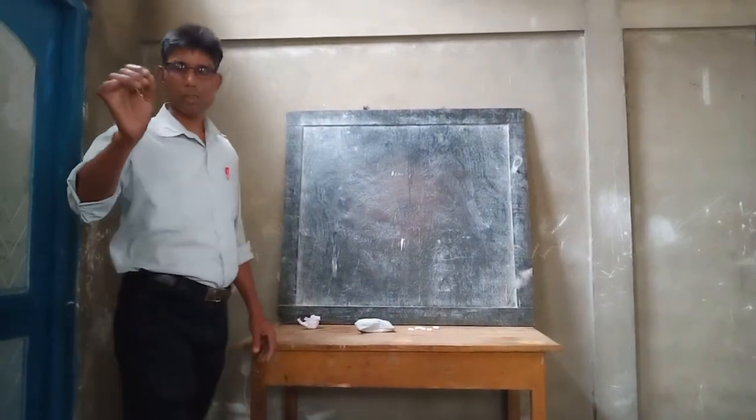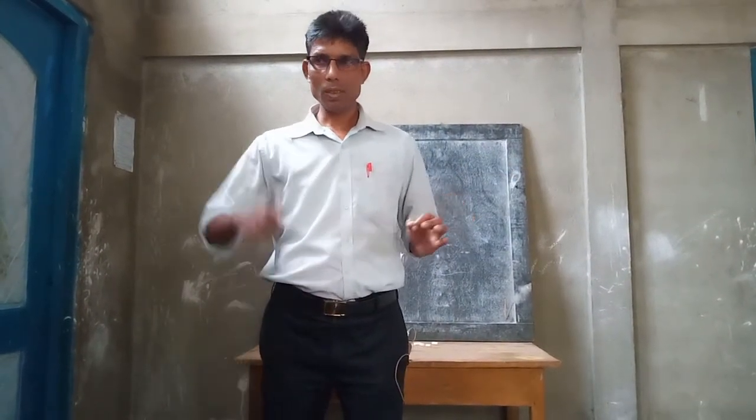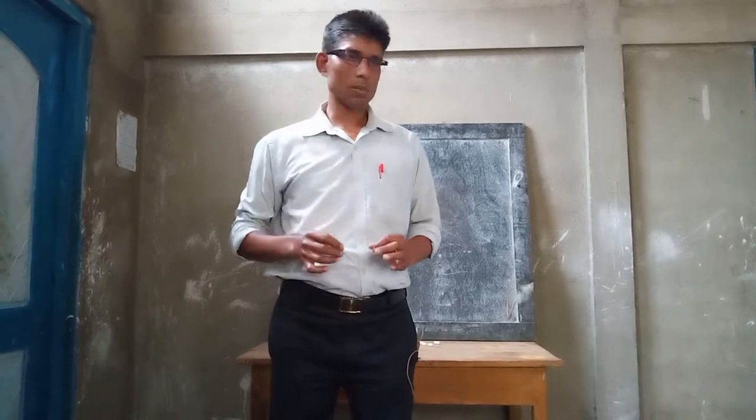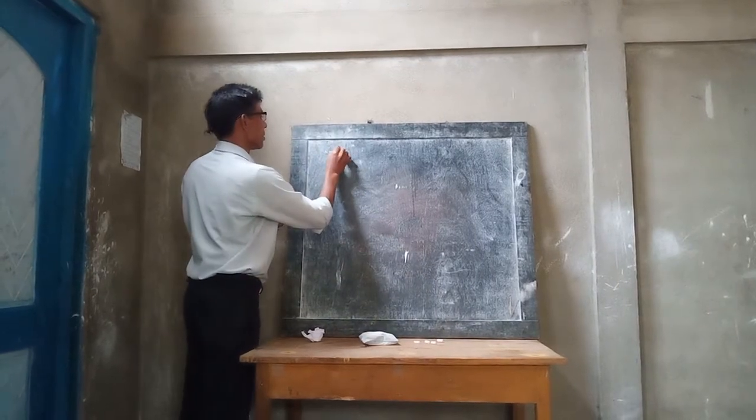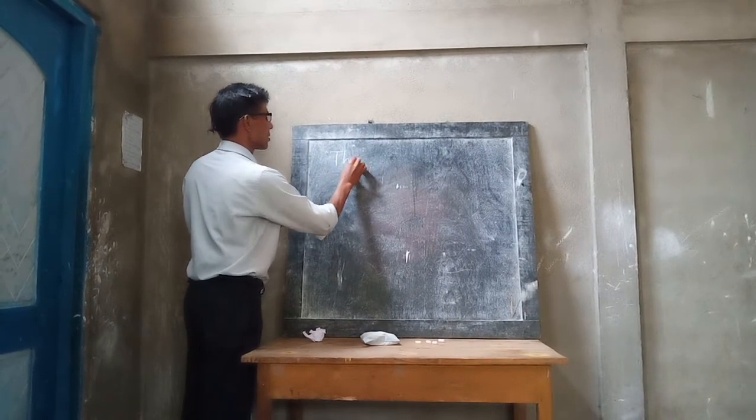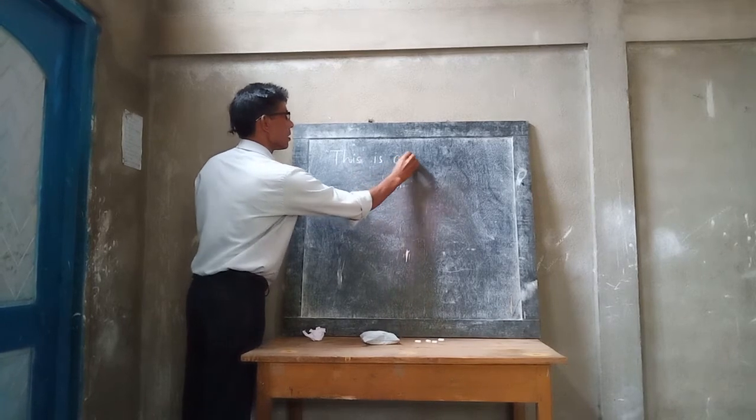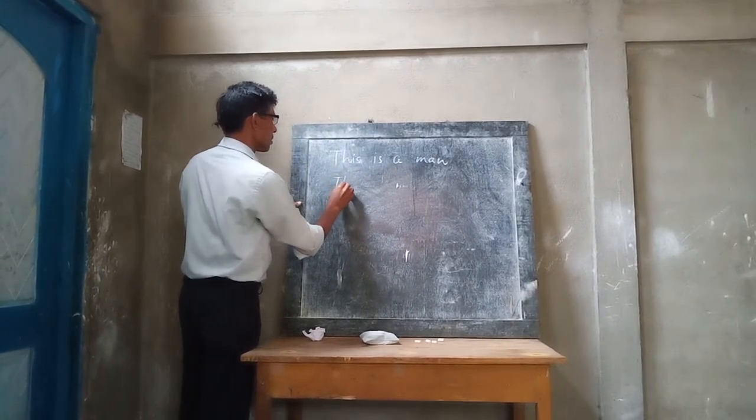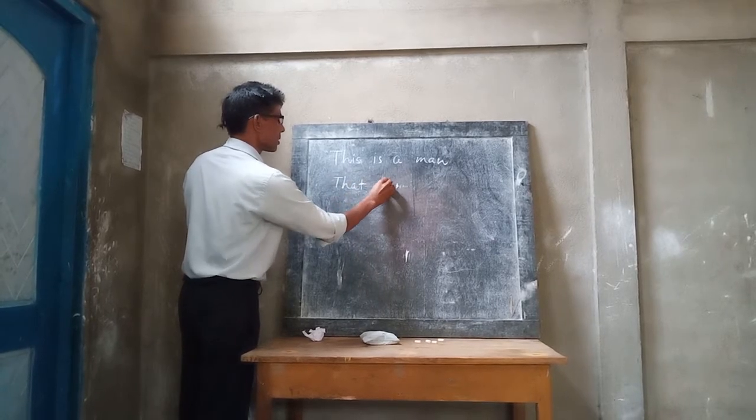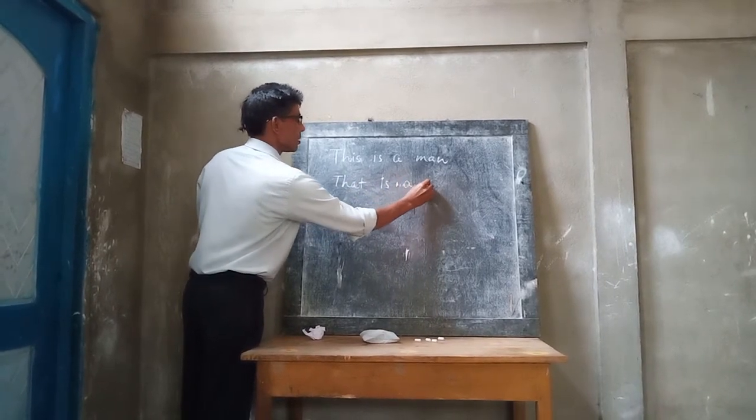These kids visualize that this is a man, that is a goat. I am just writing on the board. This is a man. That is a goat.